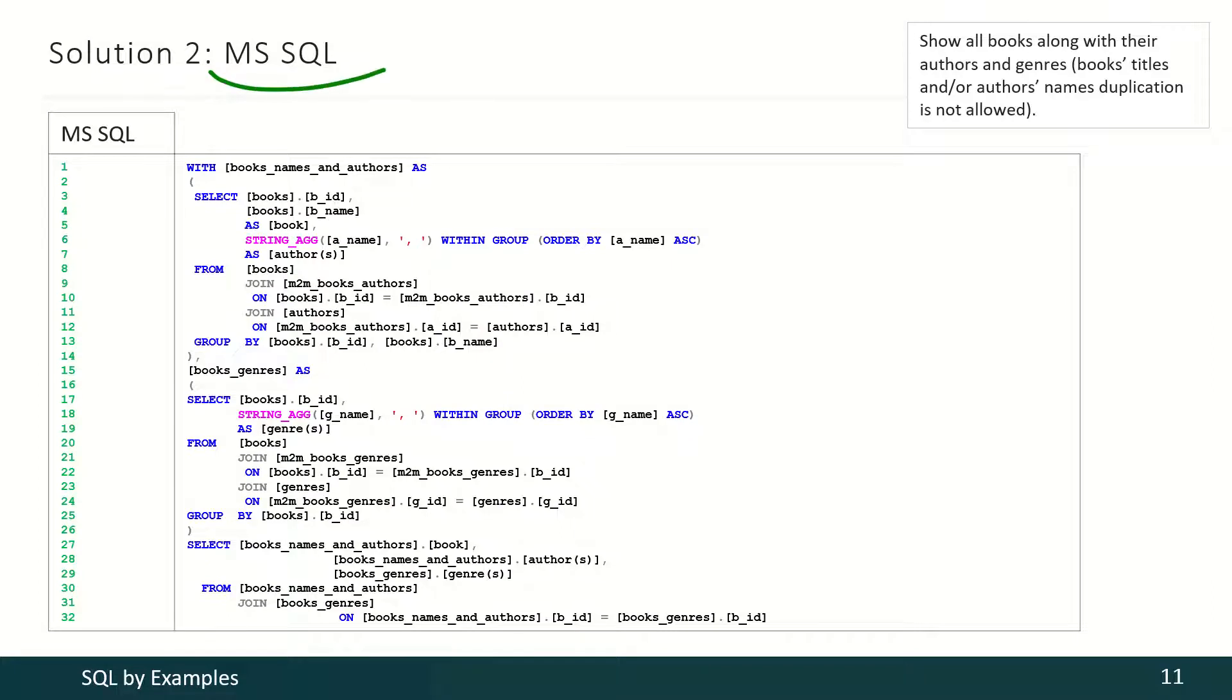With Microsoft SQL Server the solution is not so simple. We cannot use STRING_AGG function twice in the same query. In other cases, maybe we may, but in this particular case we may not. So we have to produce two queries. The first one shall combine books' titles and authors' names. The second query shall combine books' titles and genre names. And then we have to join the results of that first and that second query.